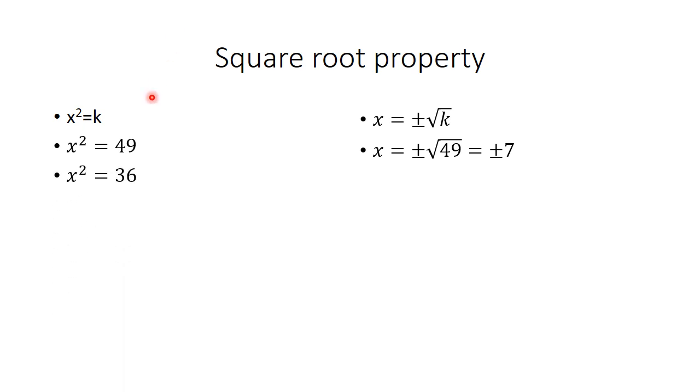Using the square root property, we know the answer is going to be plus or minus the square root of 49, which is plus or minus 7. If you want x squared equals 36, just do it again. Your answer is plus or minus 6.